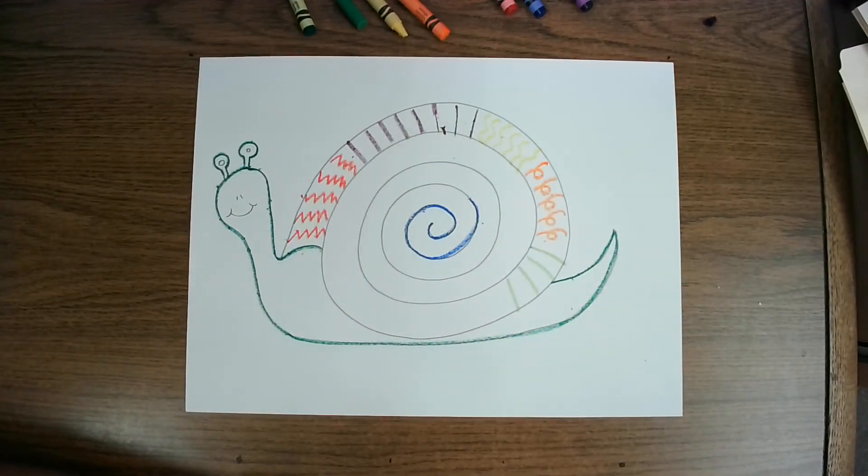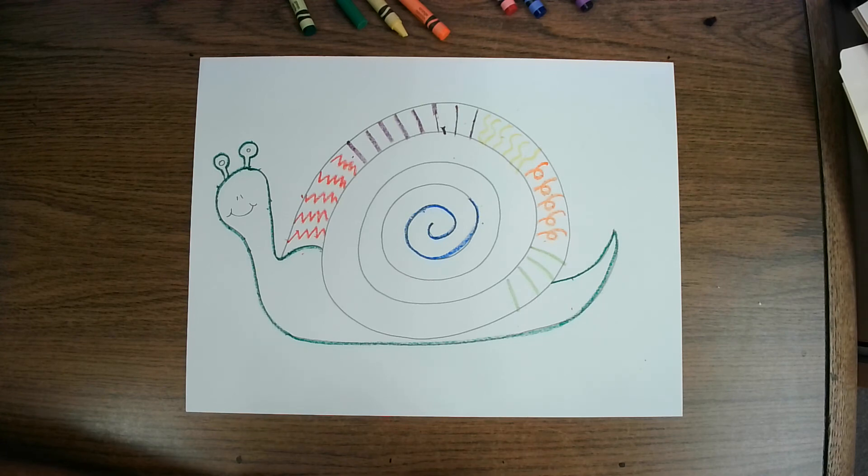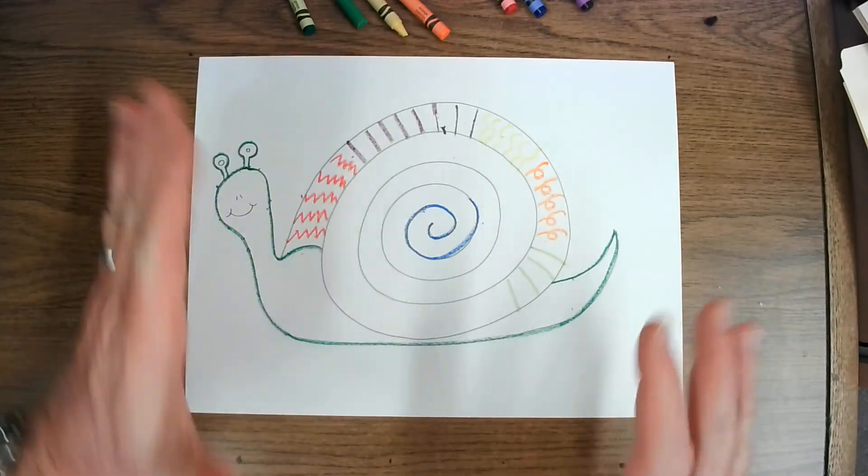If you don't have watercolor paints at home, you can take any type of poster paint or non-toxic, temporary paint, any paint that's safe for kids. And you can water it down with the help of an adult, and you can use that paint to paint over your entire snail.